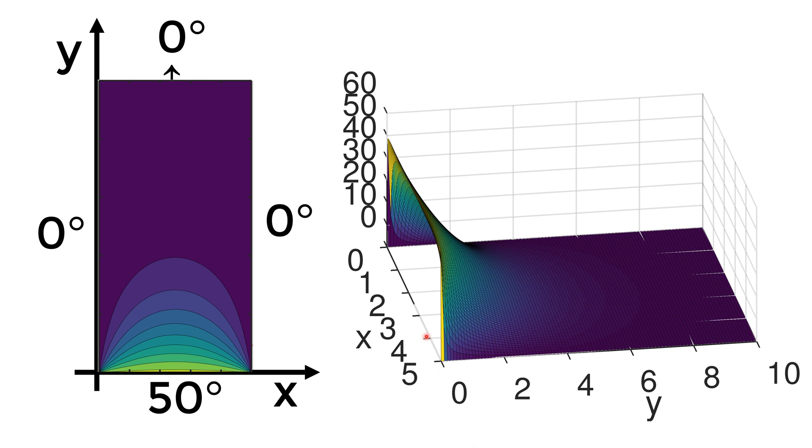In the surface plot, the height of the curve represents the temperature, and you can see the higher temperature at the bottom and lower temperature as you move towards the positive y and towards the two side surfaces.